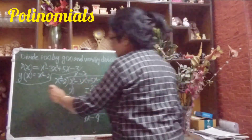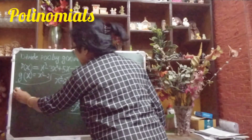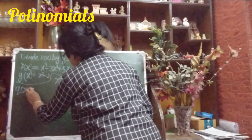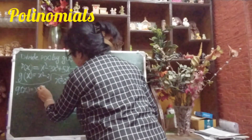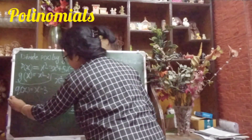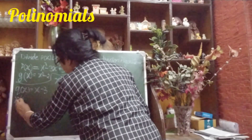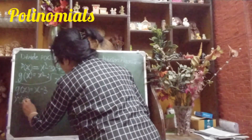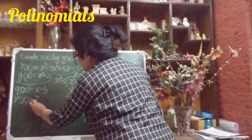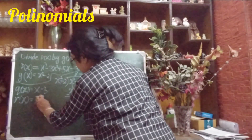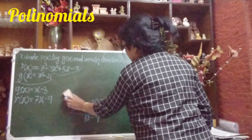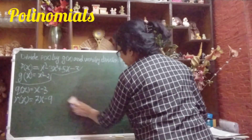We have our quotient q(x) = x − 3 and our remainder r(x) = 7x − 9.